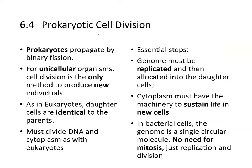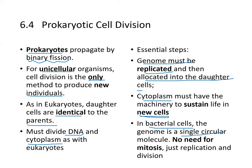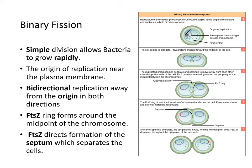Prokaryotes propagate by a process called binary fission. For unicellular organisms, cell division is the only method to reproduce. As in eukaryotes, daughter cells are identical to the parent and the DNA and cytoplasm must be divided equally. The genome must be replicated and allocated into daughter cells, and the cytoplasm must have the machinery to sustain life in new cells. In bacterial cells, the genome is a single circular molecule — there is no need for mitosis, just replication and division.